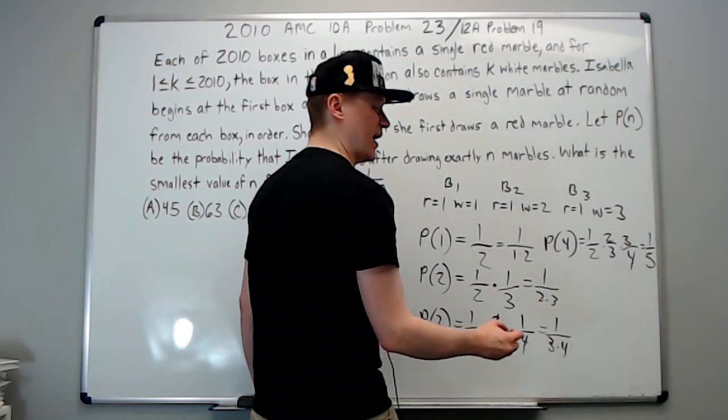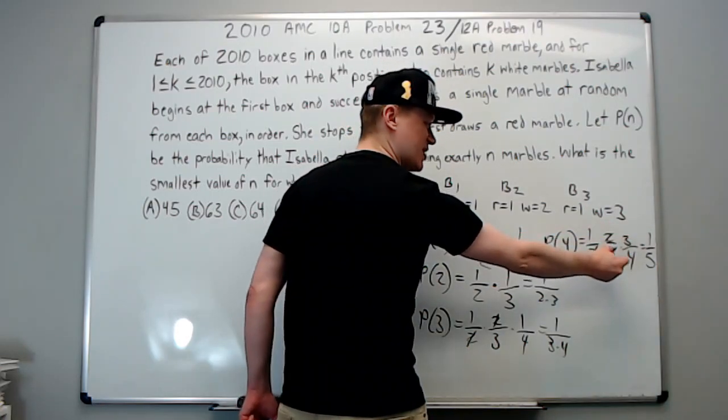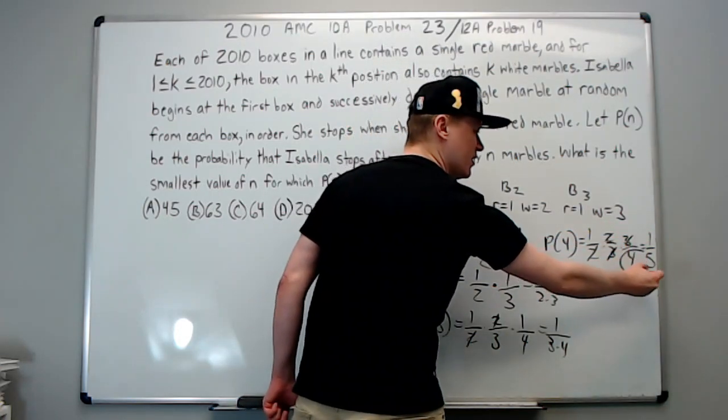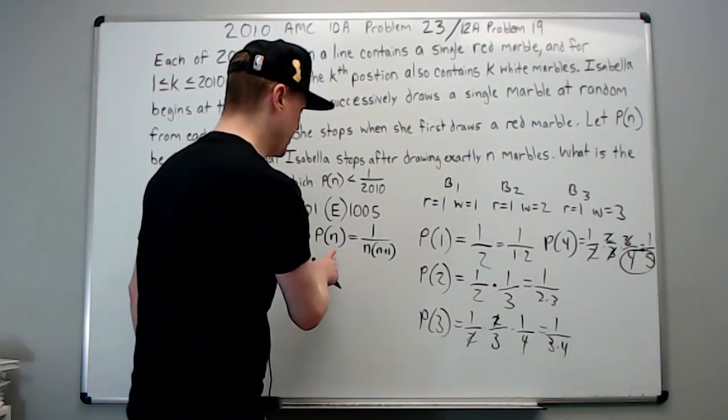Again, observe that the denominator here cancels the numerator here, and it's a chain reaction. But what you're left with is one in the numerator and four times five in the denominator, which indeed confirms this is what's happening.